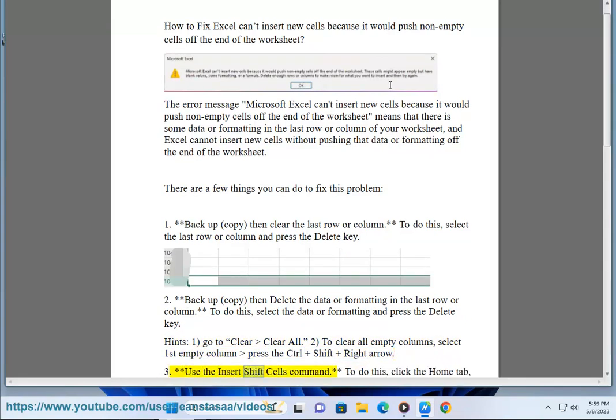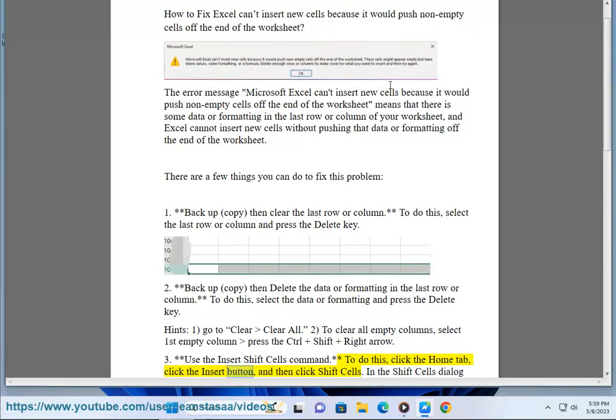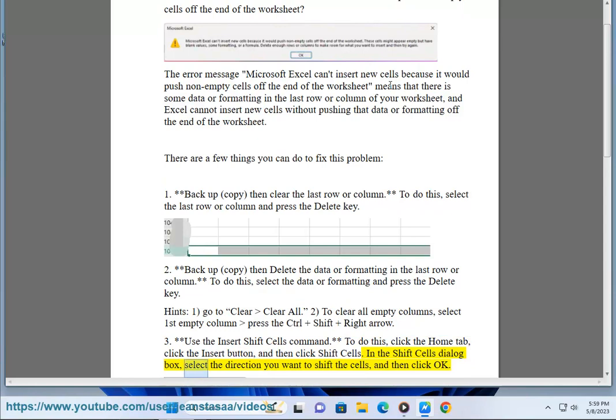Use the Insert Shift Cells command. To do this, click the Home tab, click the Insert button, and then click Shift Cells. In the Shift Cells dialog box, select the direction you want to shift the cells, and then click OK.